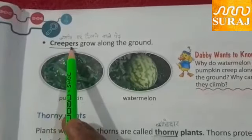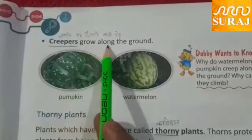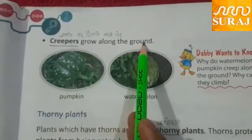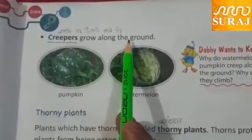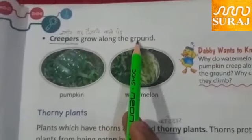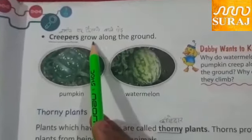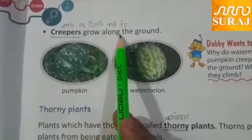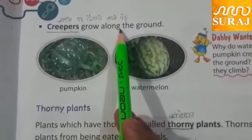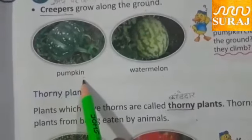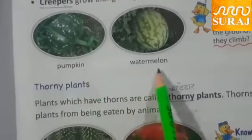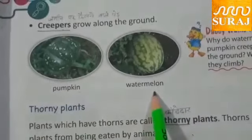Creepers grow along the ground, spreading over the surface. For example, pumpkin and watermelon.